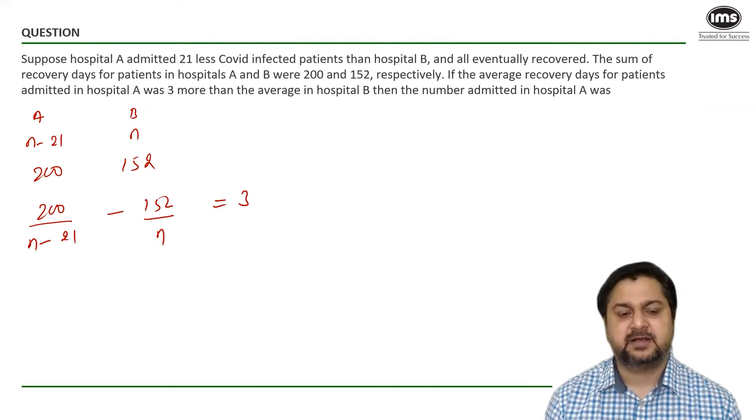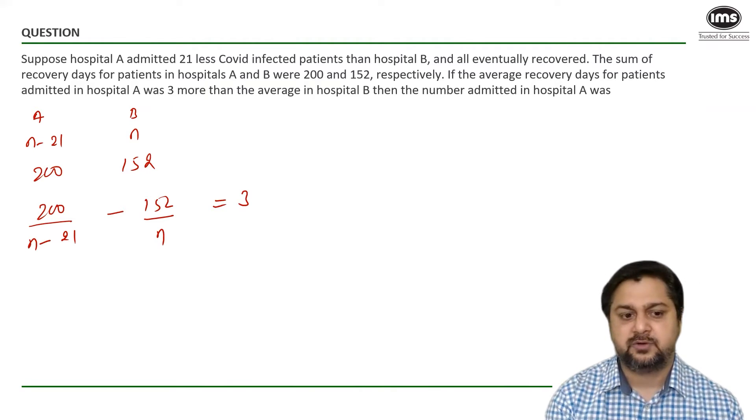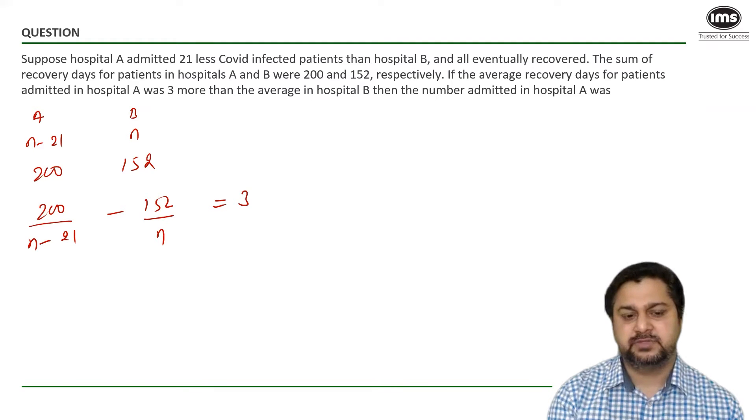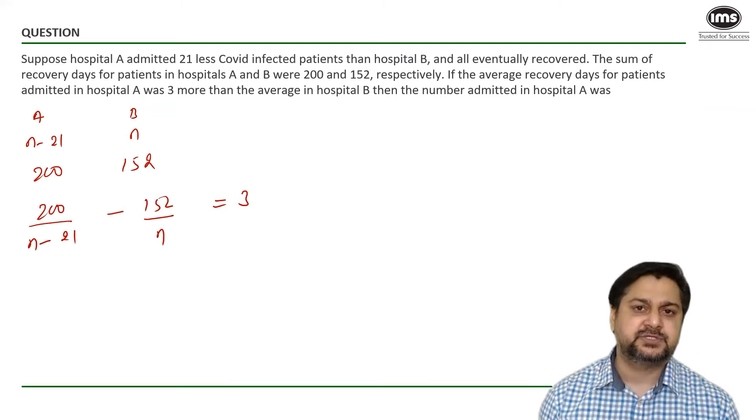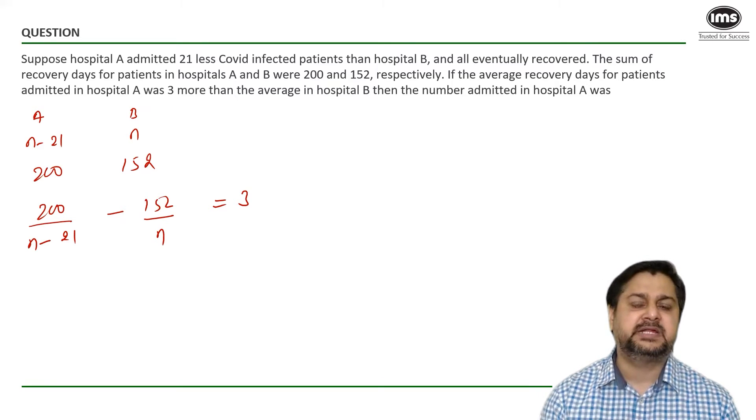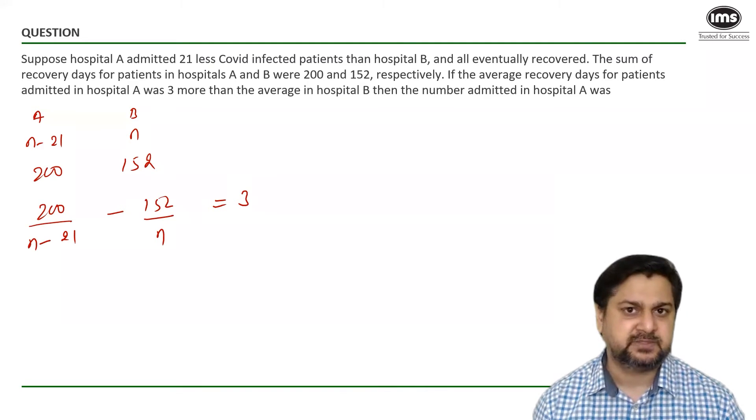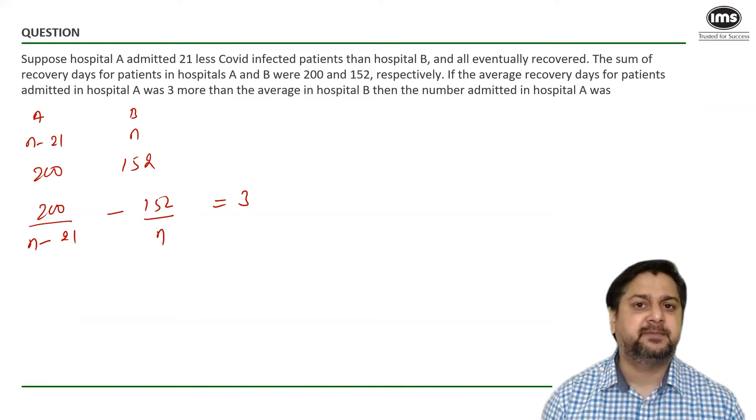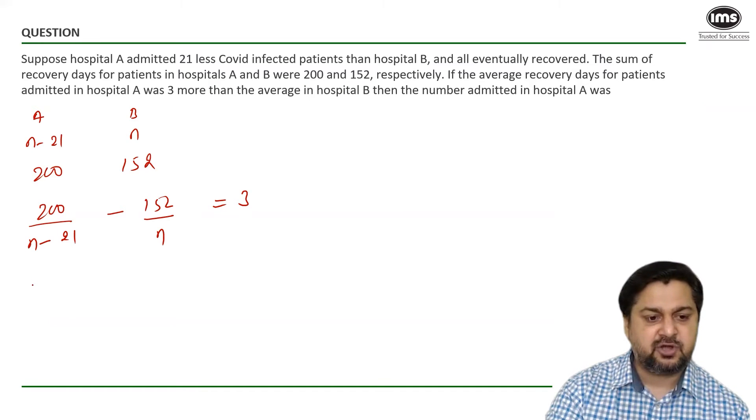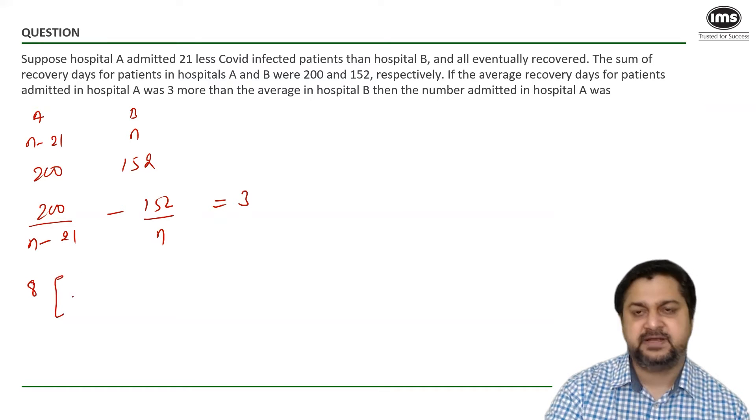Now this looks like a bit of calculation because of course it's going to look like a quadratic and the numbers 200 and 152 are also huge. So in these type of scenarios what I would recommend is that try to make numbers as small as possible. Now if you observe 200 and 152 they both are multiples of 8. Now can I take this 8 common? Let's see if it helps.